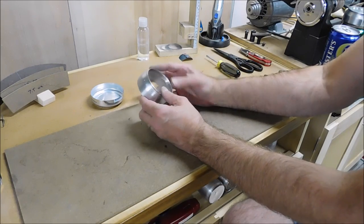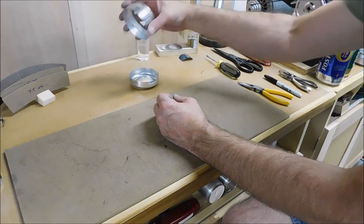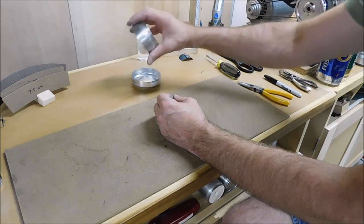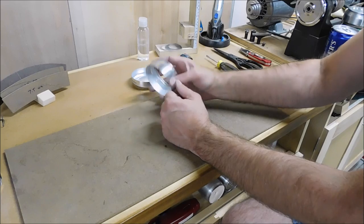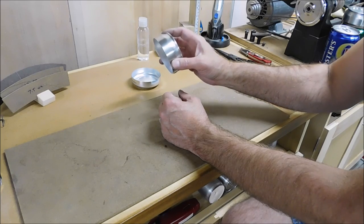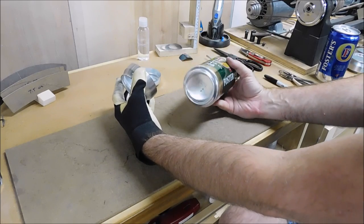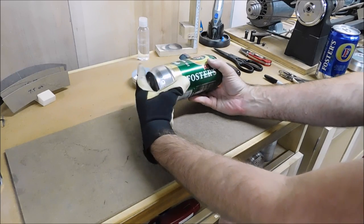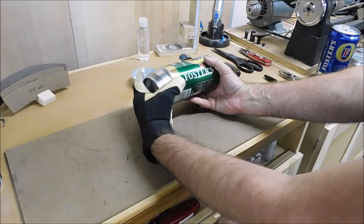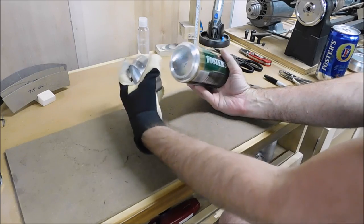One more thing I need to do to the top. The top will eventually go over the bottom so I need to stretch out the top. And I'll do it using another Foster's beer can. Don't skimp on this step of stretching out the top or you won't be happy with the result trying to get the top to fit over the bottom.